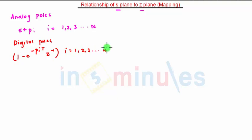The analog pole at s = -pi is transformed into the digital pole z = e^(-pi*t). When s = -pi, we can substitute -pi = si in this equation, giving z = e^(si*t). Now si is a point on the s-plane.